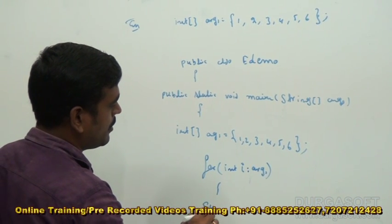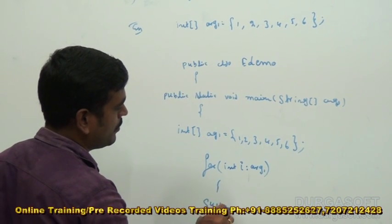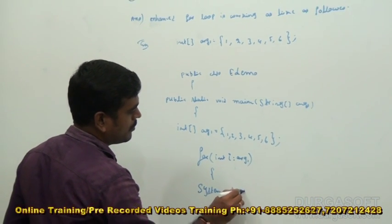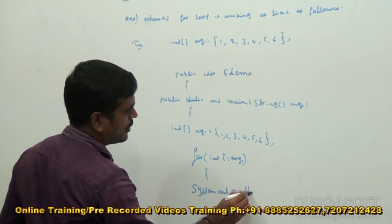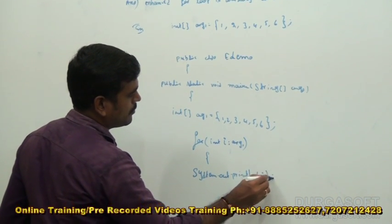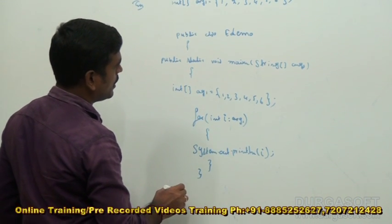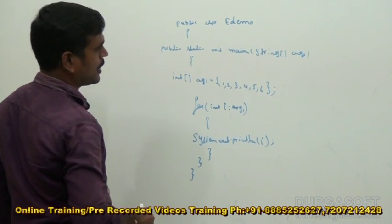Now, System.out.println(i). Close the for loop. Close the method. Close the class.